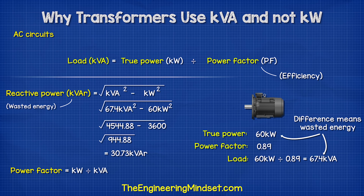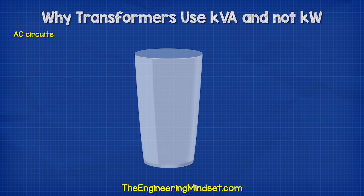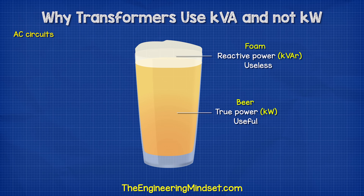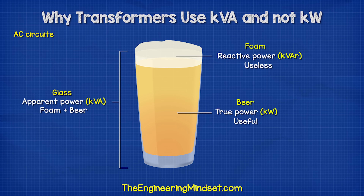Power factor is just the ratio of true power and apparent power. If you think of a glass of beer, the liquid beer is the useful stuff — this is your true power in kilowatts. But there is always some foam which is useless; we don't want that. This is the reactive power, or the volt amp reactive. You pay for the total volume of the glass regardless of how much foam and beer is inside. This is your apparent power in volt amps.